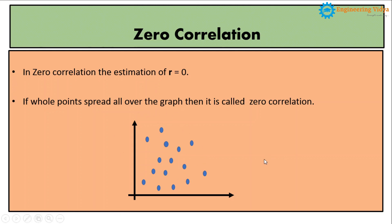So in this lecture we have covered all types of correlation: positive, negative, and zero correlation. From the coming lecture we are going to start the computation procedure. Thank you.